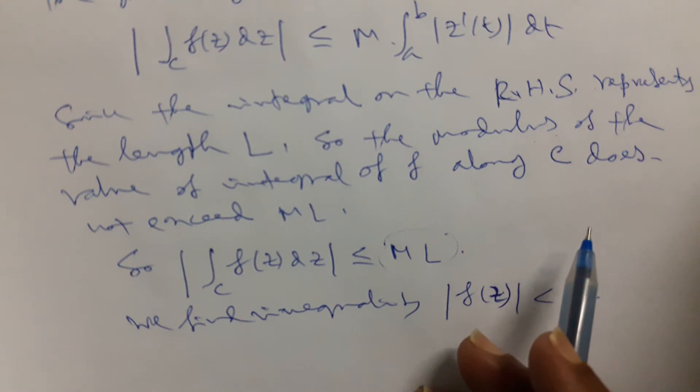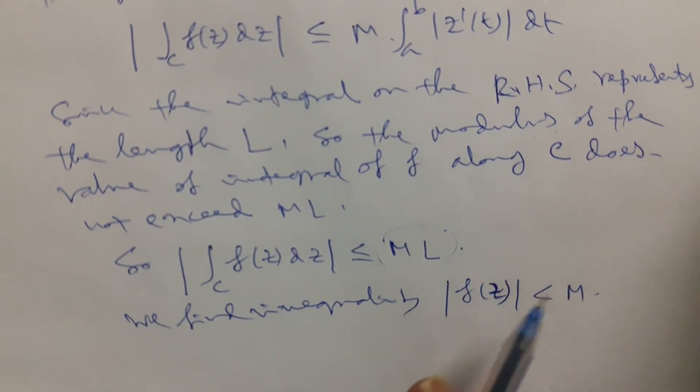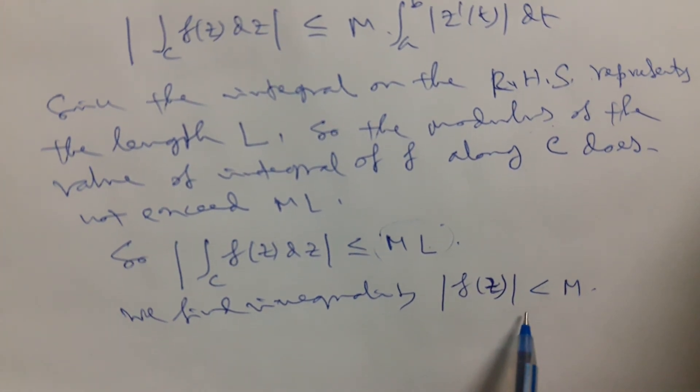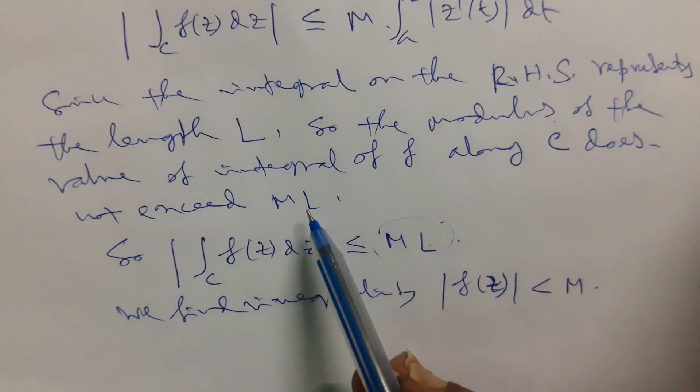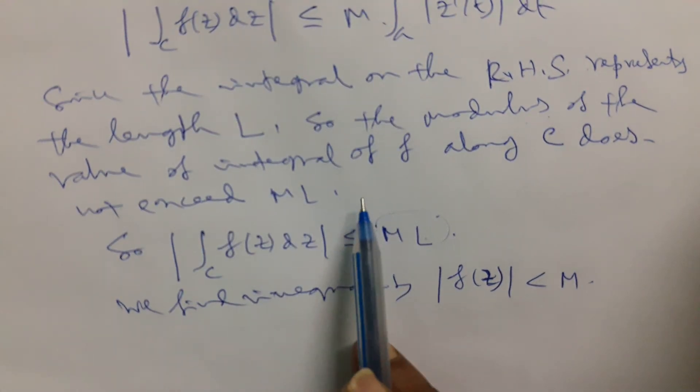So in this way we are getting this type of result like the formula of mL. And when the real value function modulus of f(z) is continuous in the closed bounded interval a to b, this function always has a maximum m in this interval. And the result holds when f is piecewise continuous. So today we end our discussions regarding the continuations of the earlier videos of contour integration.